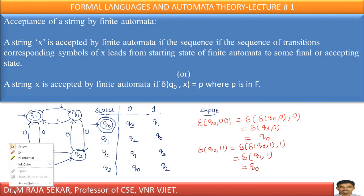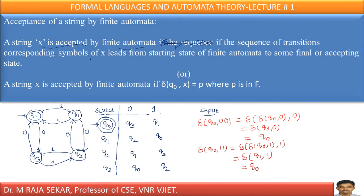When can we say a finite automata accepts a string? A string X is accepted by a finite automata if the sequence of transitions corresponding to symbols of X leads from the starting state of the finite automata to some final state. In simple terms, if the string X is fed to the initial state of the finite automata, after reading the entire string, you must be in some final state P, where P is in F — the set of all final states.